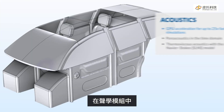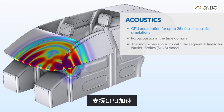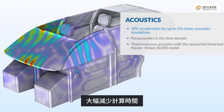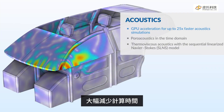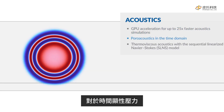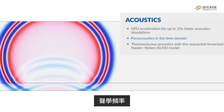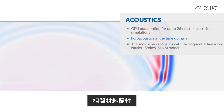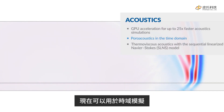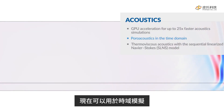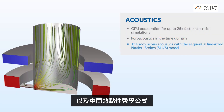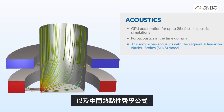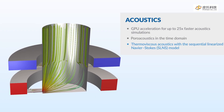In the ACDC module, support for GPU acceleration drastically reduces computation time for time-explicit pressure acoustics. Frequency-dependent material properties can now be used in time domain simulations, and an intermediate thermoviscous acoustics formulation is now available.